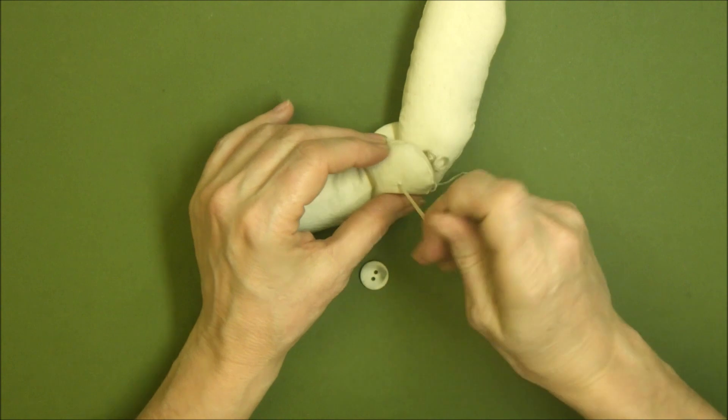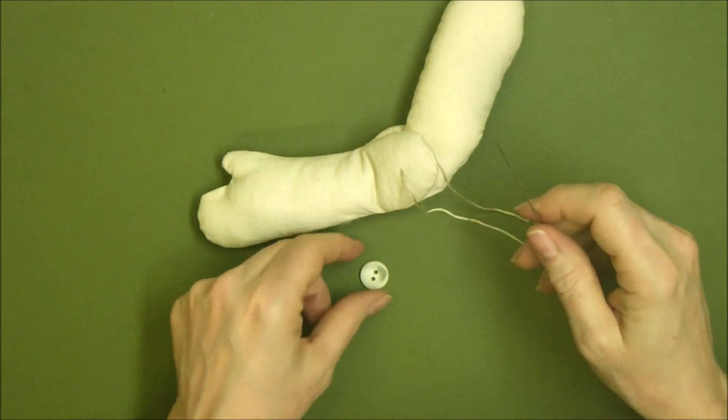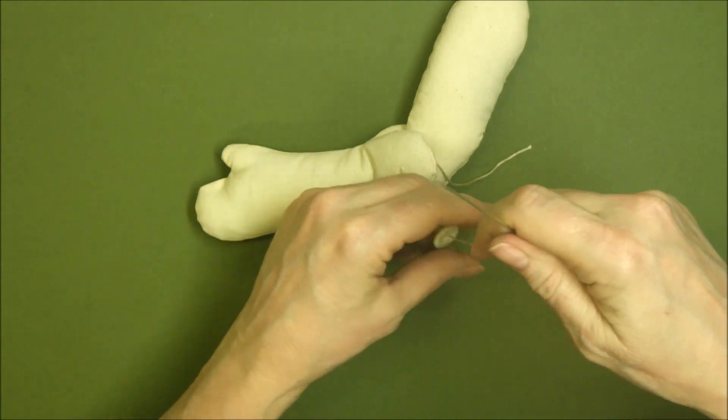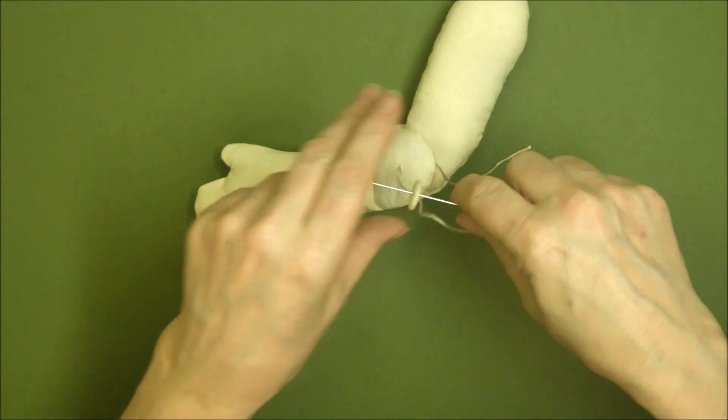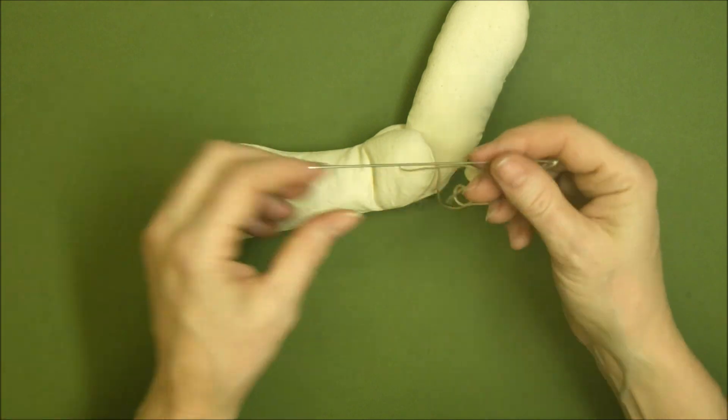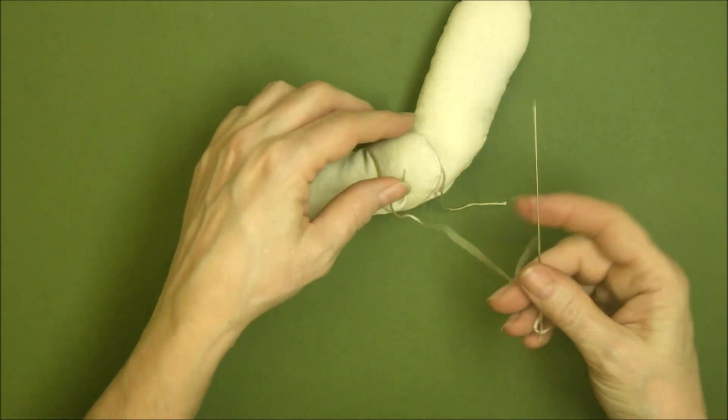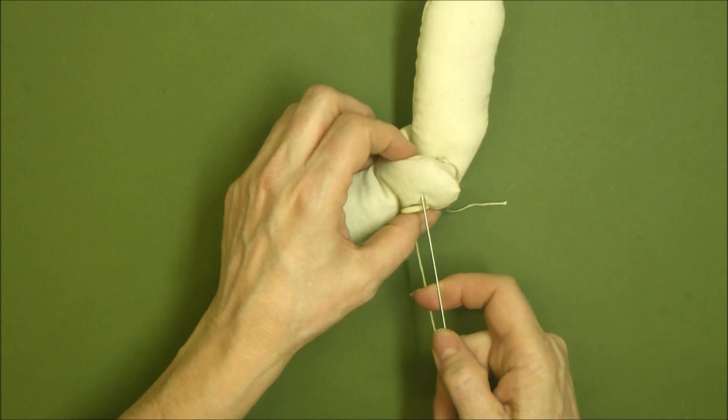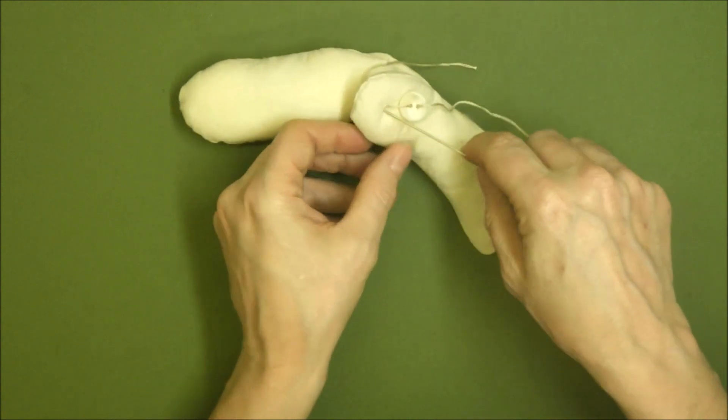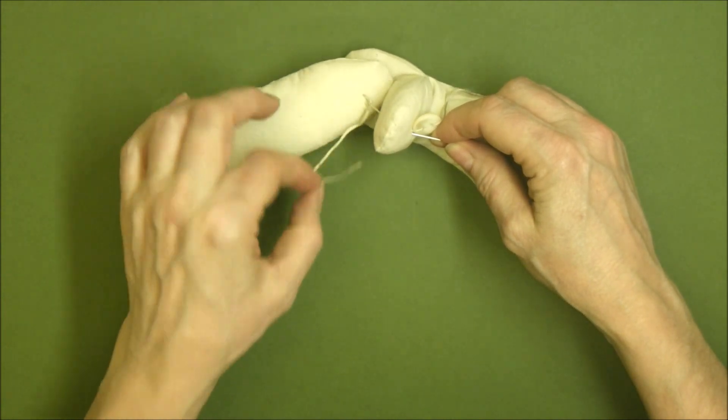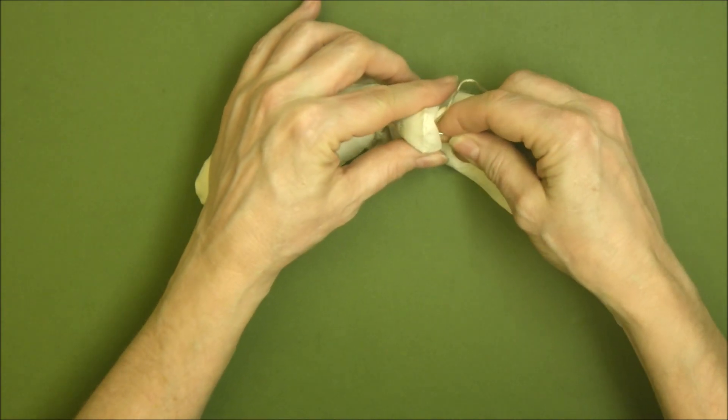Then I'm going to pop my second button on - flat side's going to sit against the outer piece of fabric - and then through the opposite hole in the button, and then back through this outer section to where I started where my tail of my thread is hanging there.